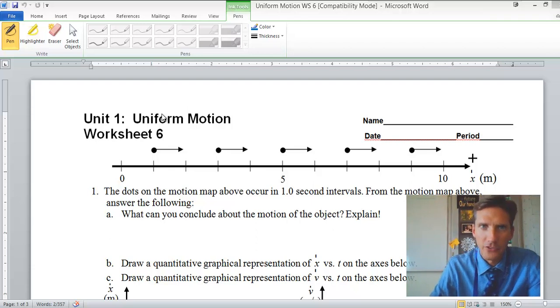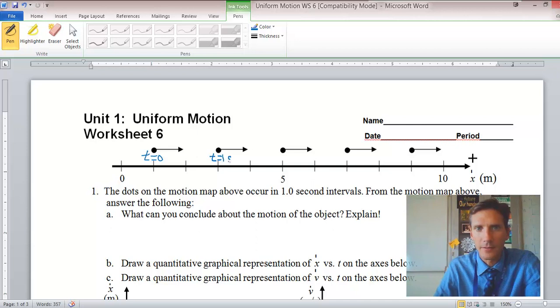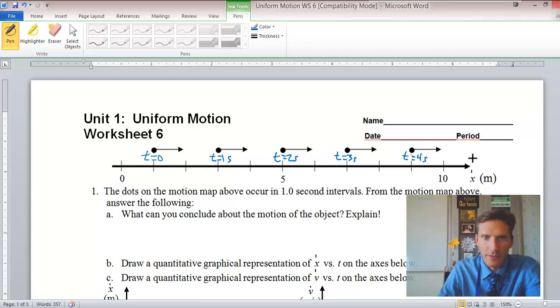I'd like to give you a little help getting started on this worksheet. So let's start by labeling the time for these here. This would be time equals zero. Over here we're going to have time equals one second, time equals two seconds, three seconds, and four seconds, because it tells us right here that these are occurring in one second intervals.